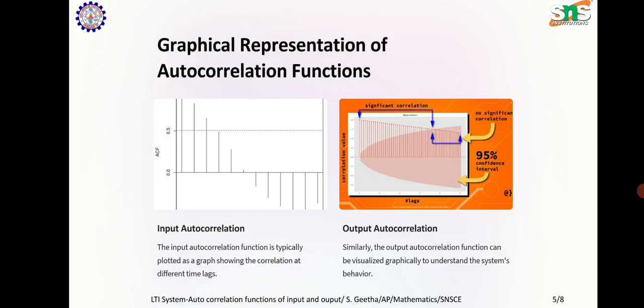Graphical representation of autocorrelation functions. Input autocorrelation: The input autocorrelation function is typically plotted as a graph showing the correlation at different time lags. Output autocorrelation: Similarly, the output autocorrelation function can be visualized graphically to understand the system's behavior.